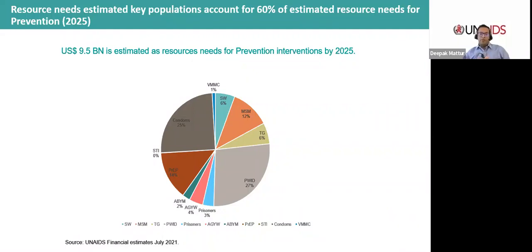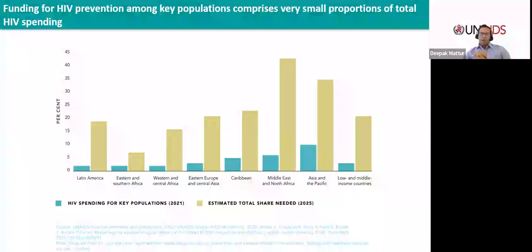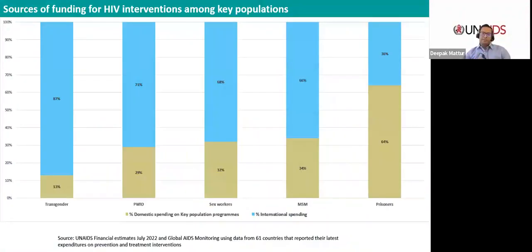Resource needs estimated for key population services account for 60% of the total estimated resource needs for prevention. Yet funding for HIV prevention among key populations comprises very small proportions of total HIV spending in LMICs — even in regions where the vast majority of new infections are occurring. On average, only 3% of total reported expenditures by 61 countries were reported spent on key population services. At least two-thirds of that funding comes from international resources, exposing prevention programs for key populations to potential further cuts in international funding.